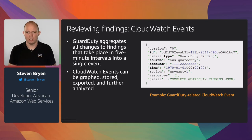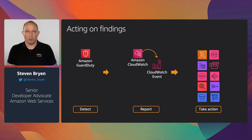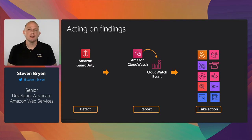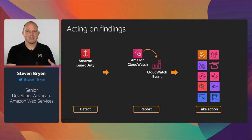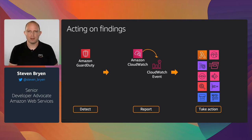CloudWatch Events adds great capability to enhance automation and improve security posture through notification or remediation. We can take events detected in GuardDuty, report them into CloudWatch Events, then create rules to trigger a Lambda function for remediation, store events in an Elasticsearch cluster via Kinesis Firehose, or use SNS to email events or escalate to a specific team. CloudWatch Events is very powerful and integrates with many AWS services to extend automation beyond just the GuardDuty service.